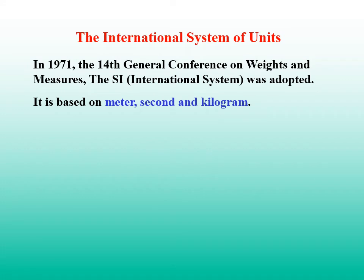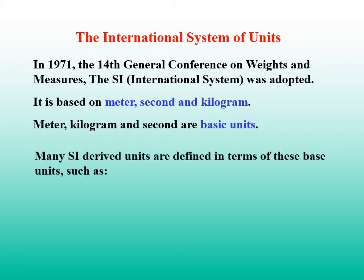In 1971, the 14th general conference on weights and measures, the SI system was adopted. It is based on meter, second, and kilogram. So we say meter, second, and kilogram are basic units. Many SI-derived units are defined in terms of these basic units, such as the unit for power. 1 watt equals to 1 joule divided by 1 second equals to 1 kilogram meter square divided by second cubic. This unit is called derived unit.